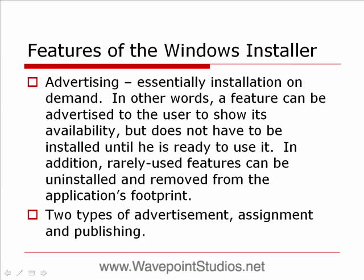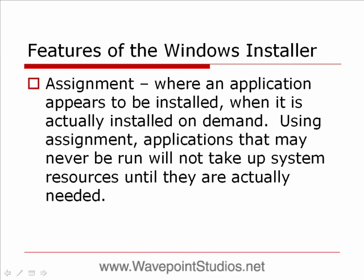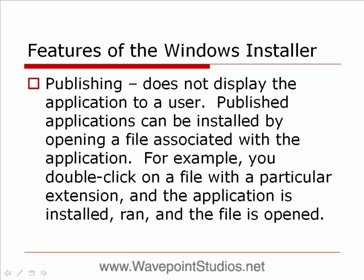In addition, rarely used features can be uninstalled and removed from the application's footprint. There are two types of advertisement: assignment and publishing. Assignment is where an application appears to be installed but is actually installed on demand, so applications that may never be run will not take up system resources until actually needed. Publishing does not display the application to a user — published applications can be installed by opening a file associated with the application; for example, double-clicking a file with a particular extension installs the application, runs it, and opens the file.